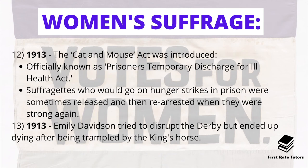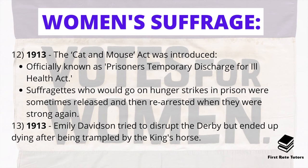In 1913 two key events happened. First, the Cat and Mouse Act was introduced — officially known as the Prisoners Temporary Discharge for Ill Health Act — which allowed suffragettes who went on hunger strikes in prison to be temporarily released and then re-arrested once they recovered at home, because the government didn't want to make martyrs of them. Second, Emily Davison, a suffragette, tried to disrupt the Derby but ended up dying after being trampled by the king's horse. This was seen as a huge loss for the suffragettes and, for some, as damaging to their public support due to excessive disruption.